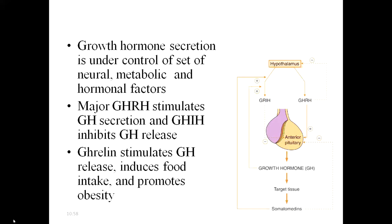The secretion of growth hormone is under the control of neural, metabolic, and hormonal factors. Among these, growth hormone releasing hormone (GHRH) and somatostatin are the most important. GHRH is secreted by the hypothalamus and stimulates the secretion of growth hormones, whereas somatostatin — also called growth hormone inhibitory hormone — inhibits the release of growth hormone. Both hormones are synthesized from the hypothalamus.